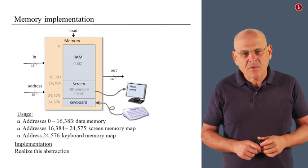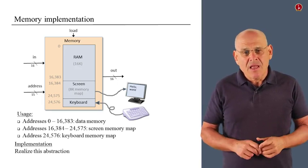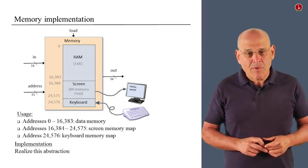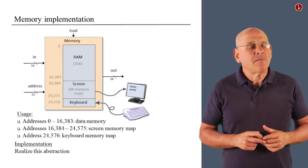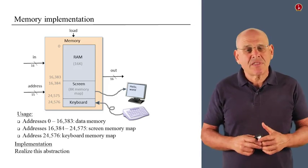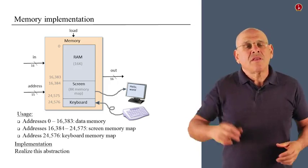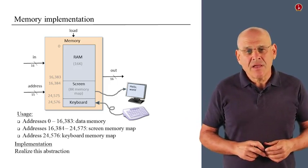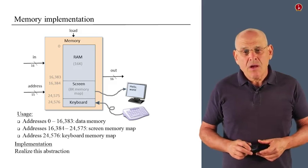And finally, if the address is 24576, then you want to route it to the keyboard memory map. So that's basically what your HDL code has to do. And if you will do it, you will achieve this glue that holds together these chip parts and delivers the overall functionality of the data memory. All right, so we've resolved the CPU and the memory.